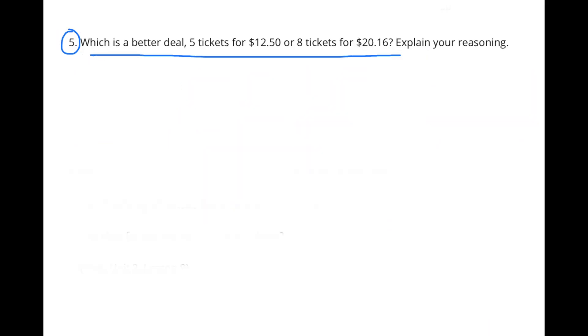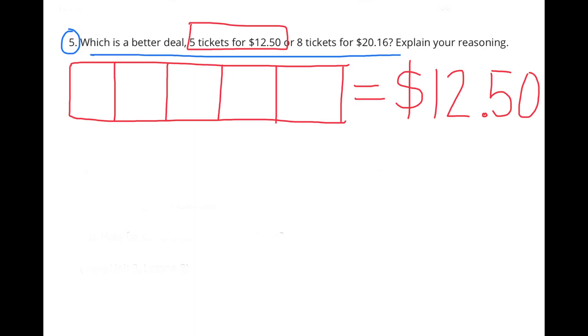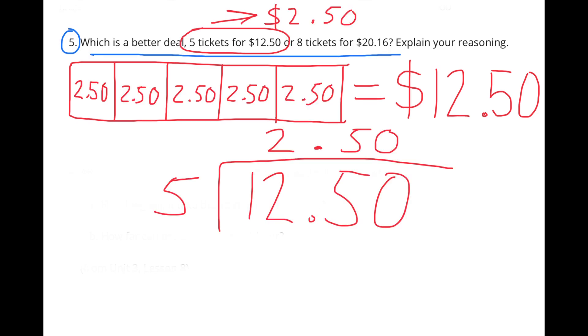Number 5: Which is a better deal? 5 tickets for $12.50, or 8 tickets for $20.16? Explain your reasoning. I made a tape diagram to represent $12.50. And since there were 5 tickets, I divided it into 5 sections. And $12.50 divided by 5 is $2.50. Each of the 5 sections is worth $2.50, or each of the 5 tickets is worth $2.50.